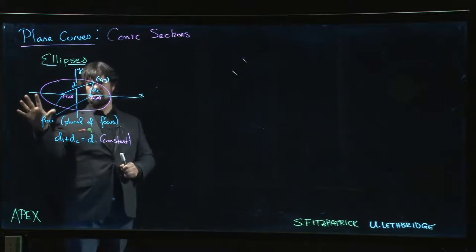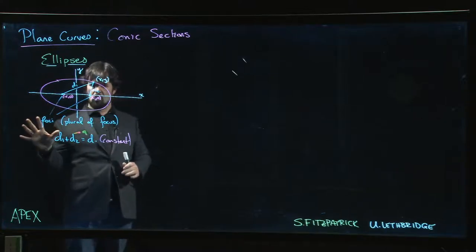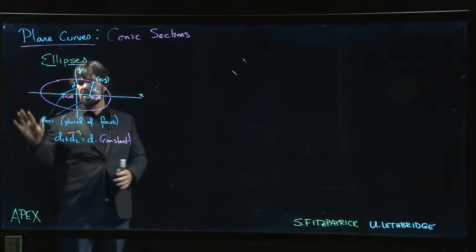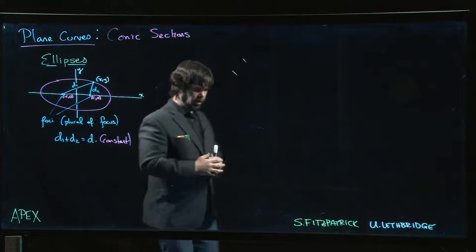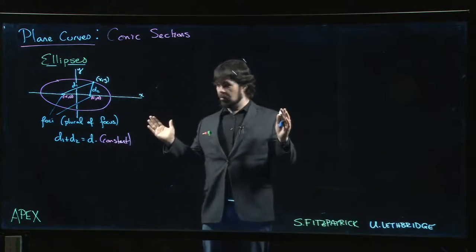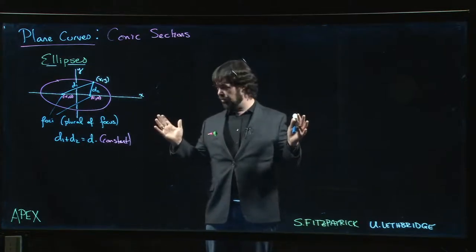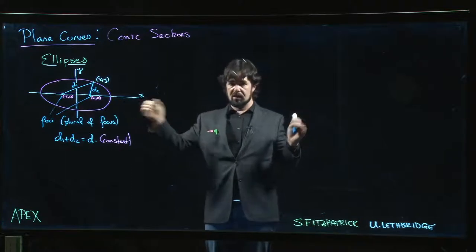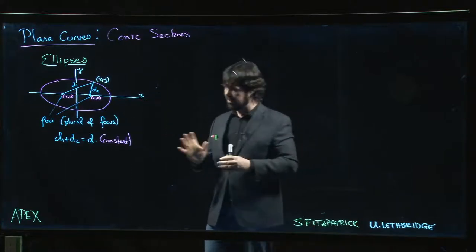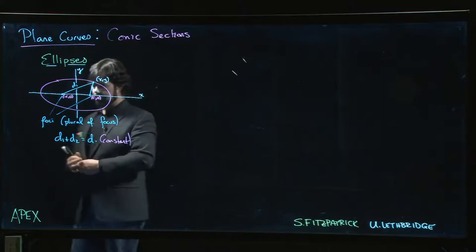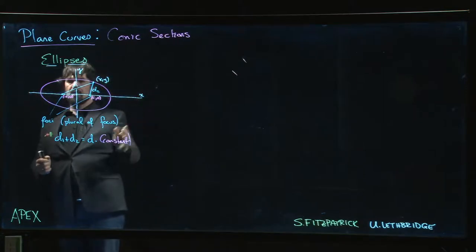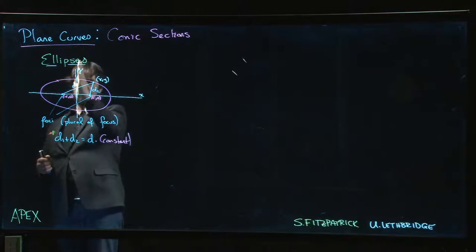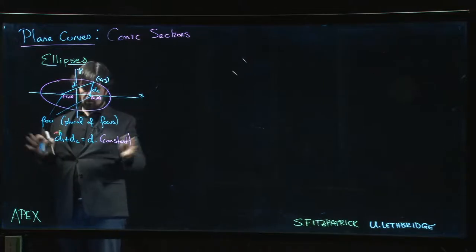The ellipse doesn't necessarily have to be defined with respect to a coordinate system, but I've drawn one in. It makes sense to draw your coordinate axes to basically play the role of the two axes of symmetry for this ellipse. We draw the x-axis through the two foci, and we draw the y-axis so that it splits the middle between the two foci. That's how we're going to set up a coordinate system.